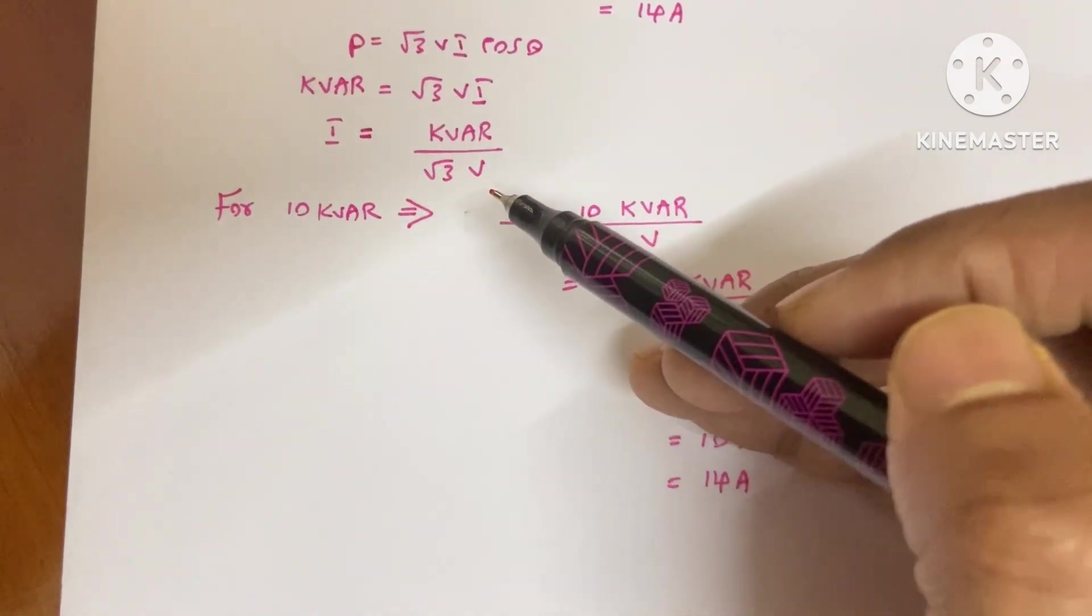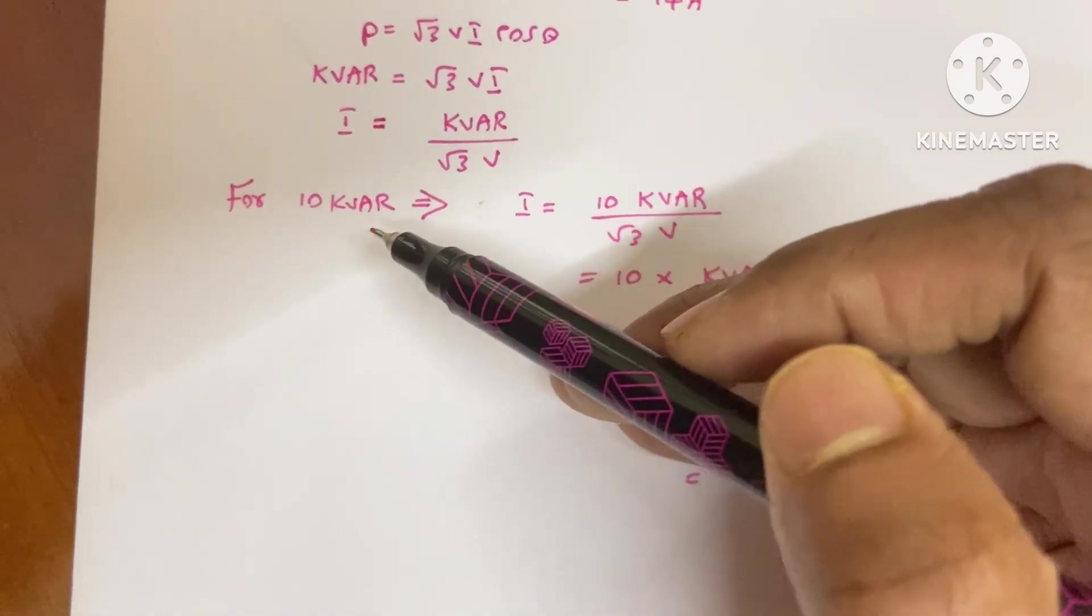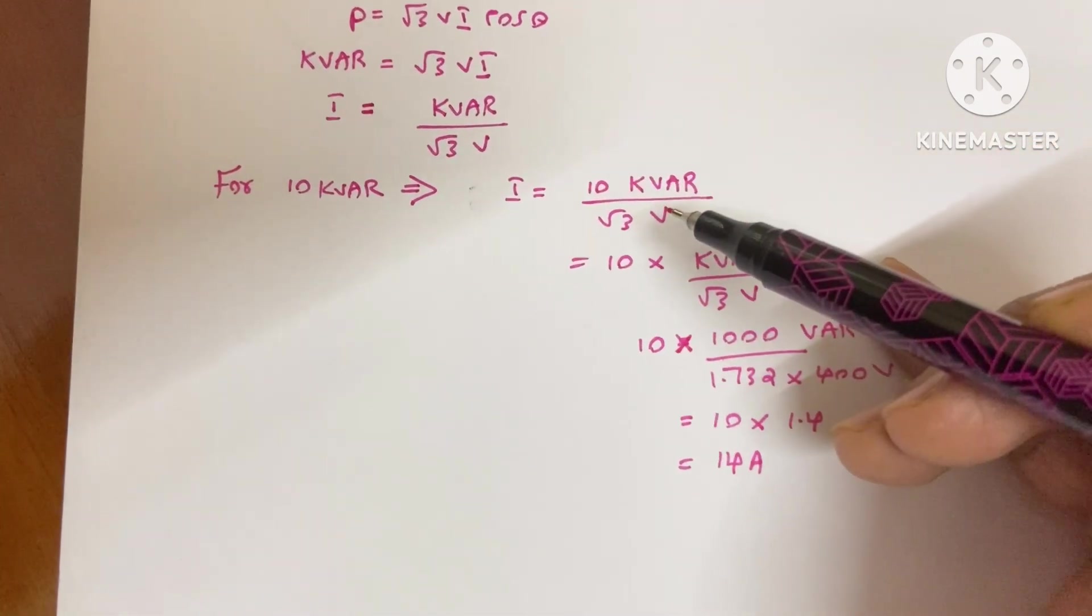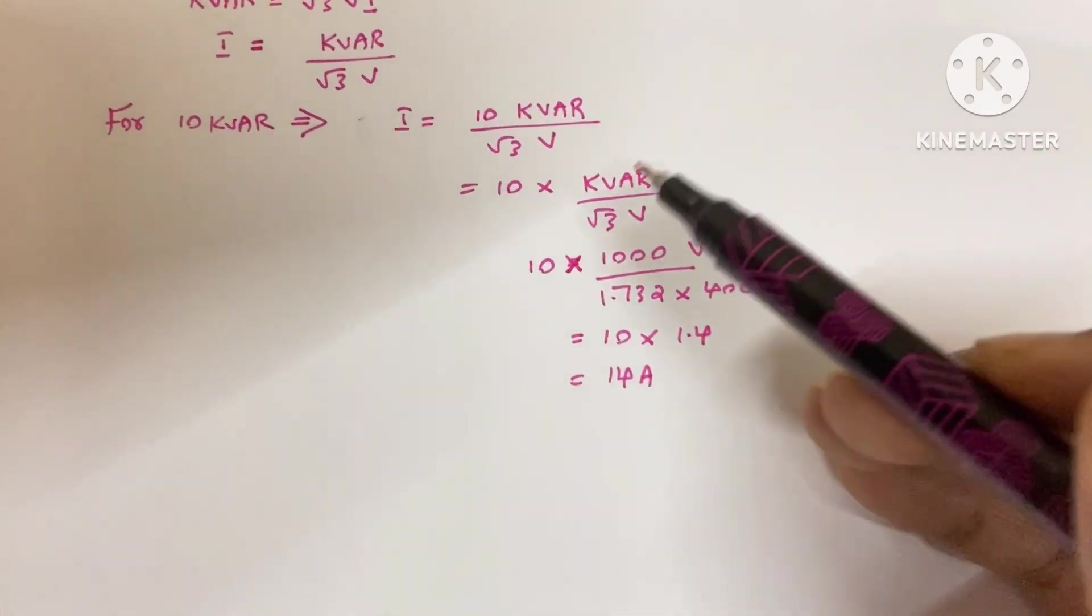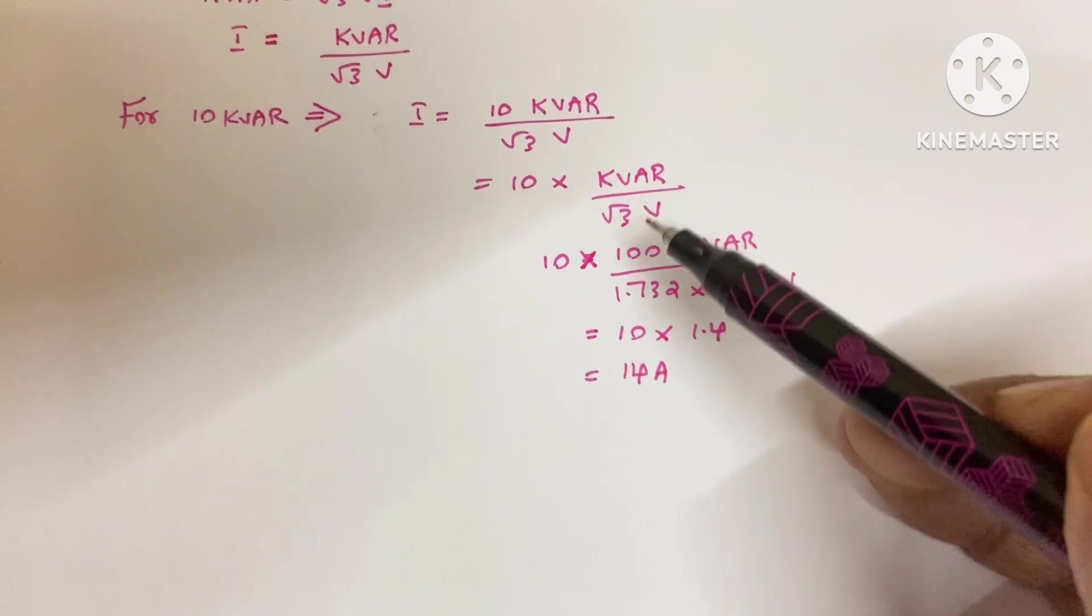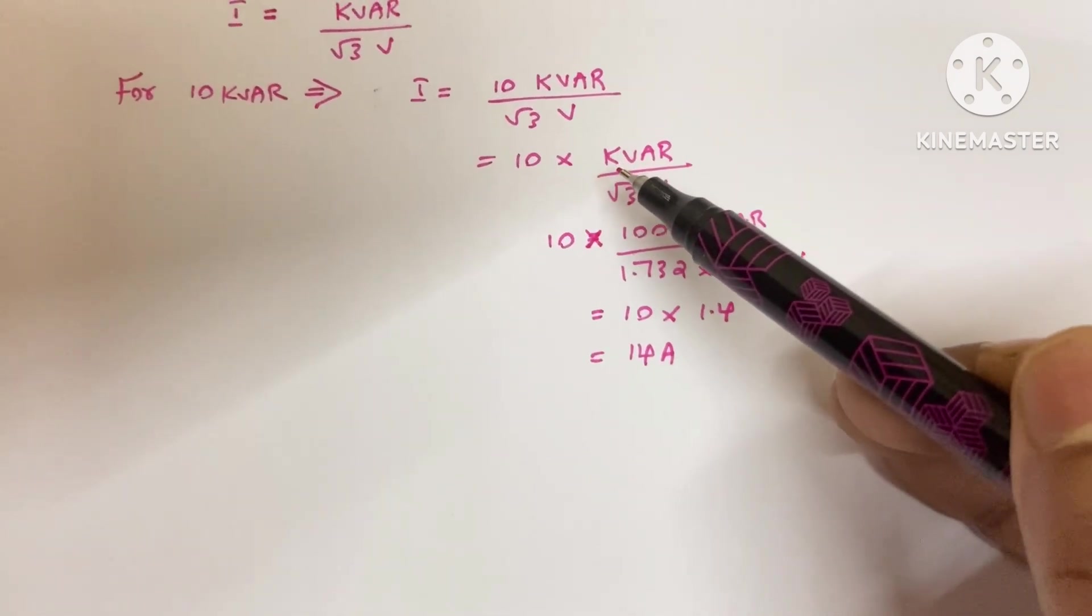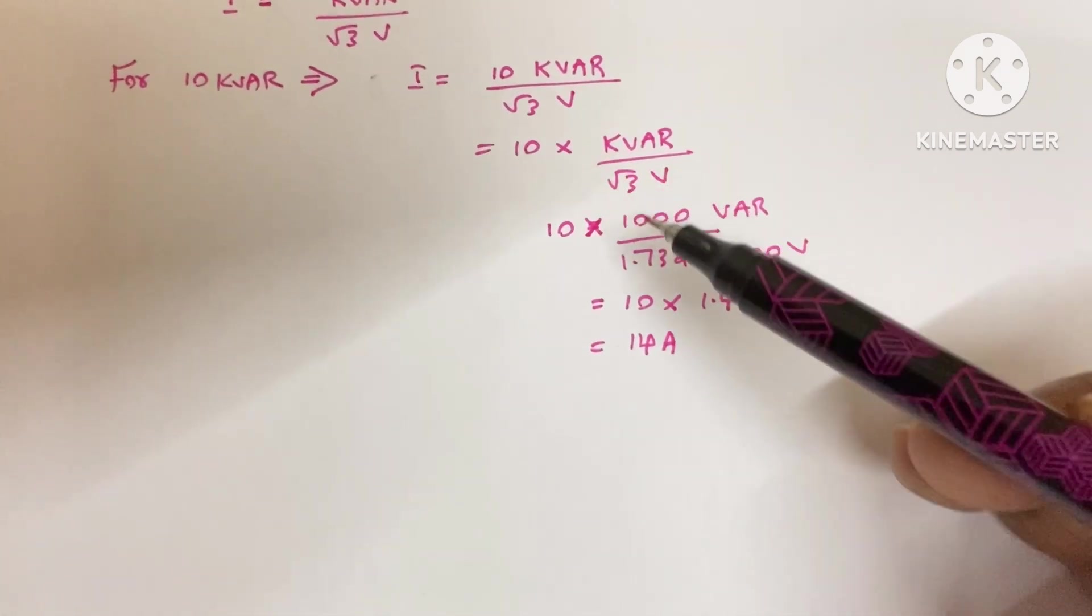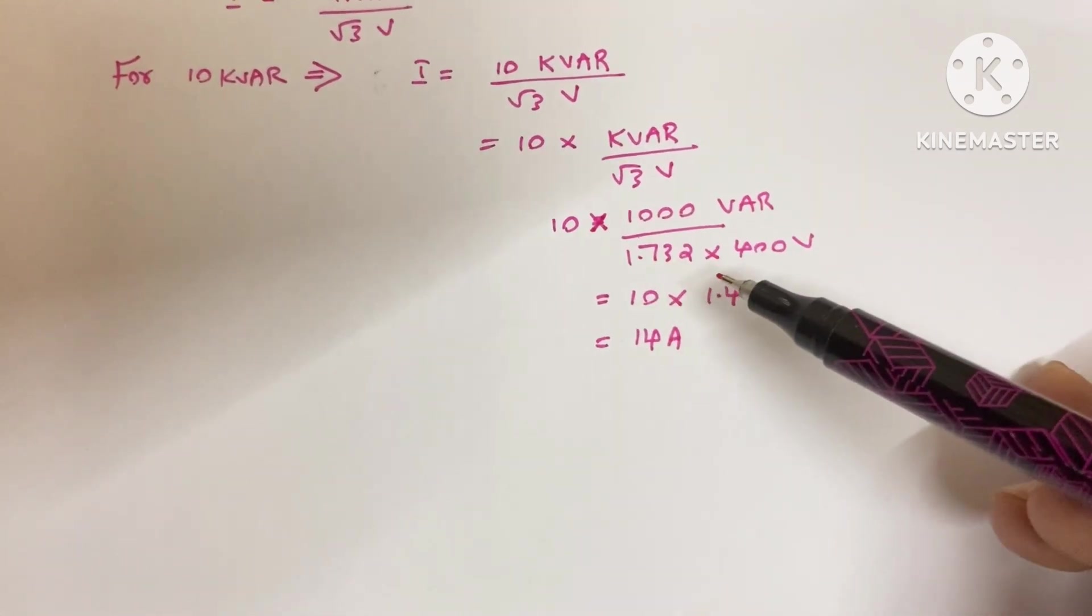For three-phase, our voltage is 400V. So for 10 KVAR, the current is 10 KVAR divided by √3 V. I'll write this equation here. KVAR means kilovar, so I put 1000 for the kilo. That's 10 times 1000 VAR divided by √3, which is 1.732, times 400V.